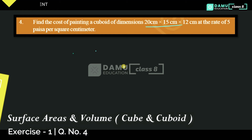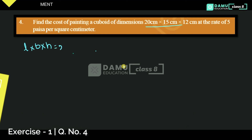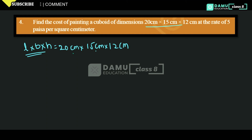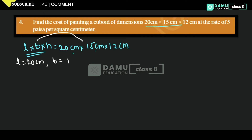When given like this, you can write length into breadth into height — that is 20 centimeter into 15 centimeter into 12 centimeter. It is the better way to write length, breadth, height in sequential manner. So you can take: length will be equal to 20 centimeter, breadth will be equal to 15 centimeter, and height will be equal to 12 centimeter.